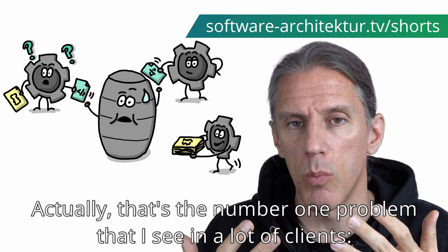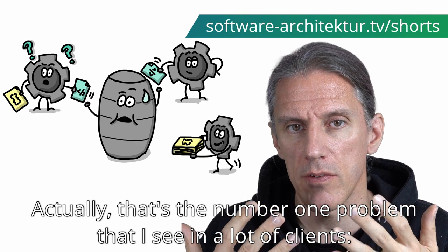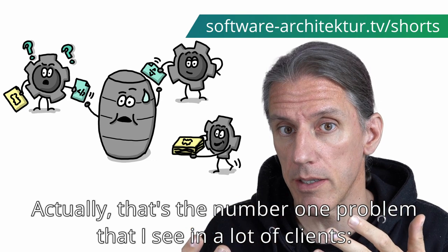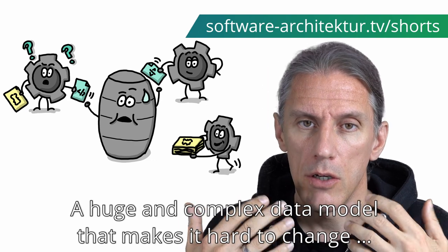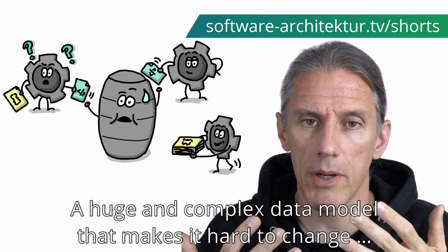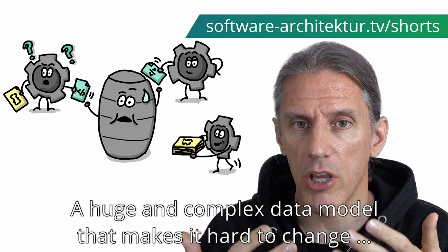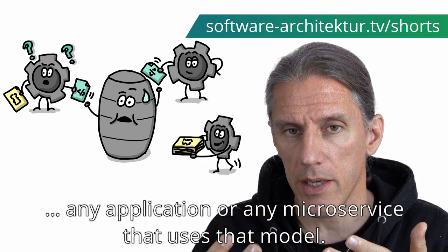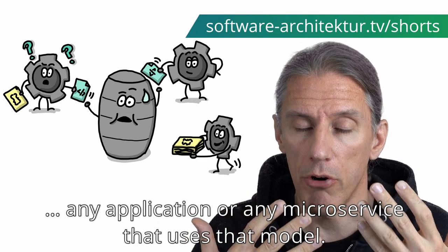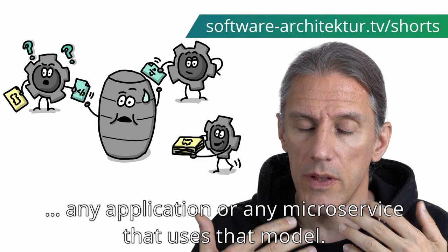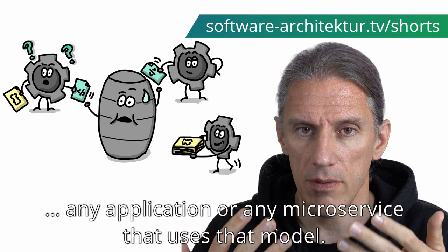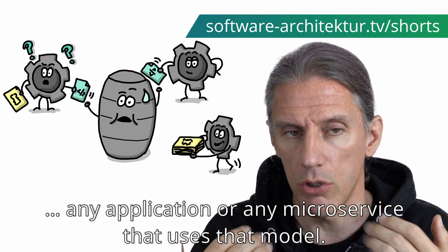That's the number one problem that I see in a lot of clients — a huge and complex data model that makes it hard to change any application or any microservice that uses that model.